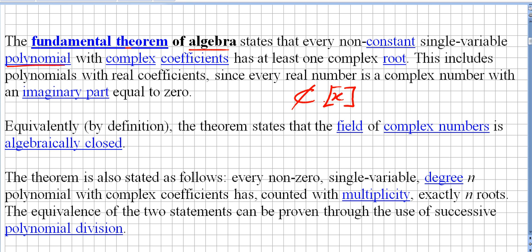This includes polynomials with real coefficients, since every real number is a complex number with an imaginary part equal to zero. A real number is nothing but a + bi where b equals zero.